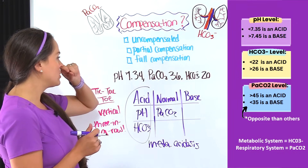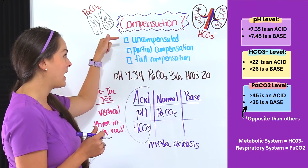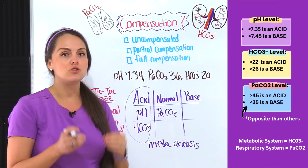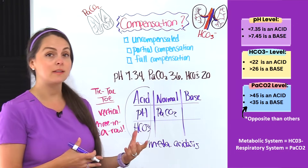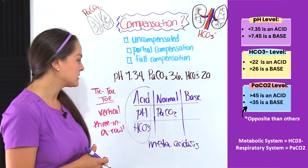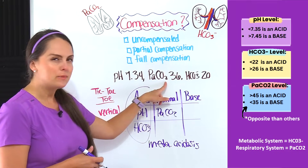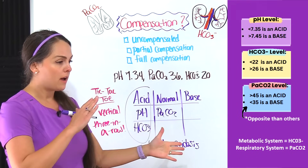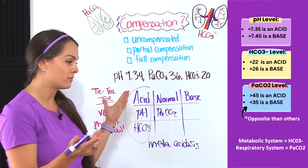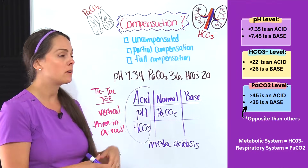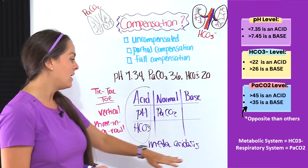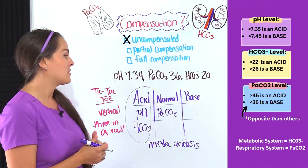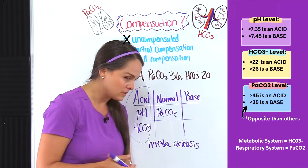However, I'm left with uncompensated or partial compensated. To figure that out, I have to look at the system that is not causing the imbalance. The system causing the imbalance is the metabolic system, so I look at the respiratory value more closely. It's 36, and normal is about 35 to 45, so it falls within range. That tells me the respiratory system isn't doing anything about this acid-base imbalance — so it's uncompensated. This would be metabolic acidosis, uncompensated.